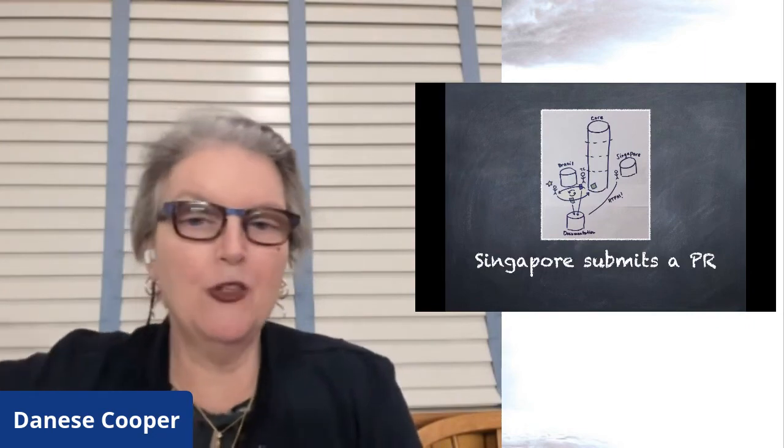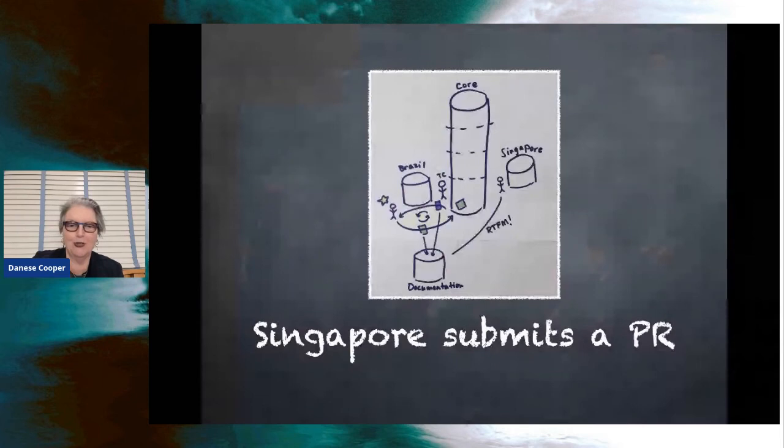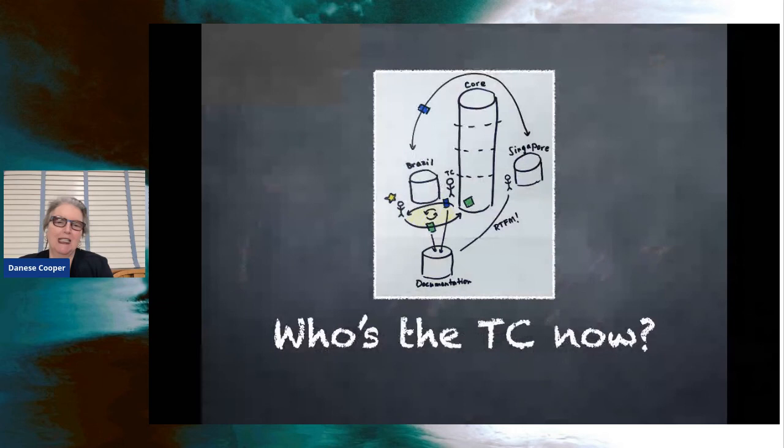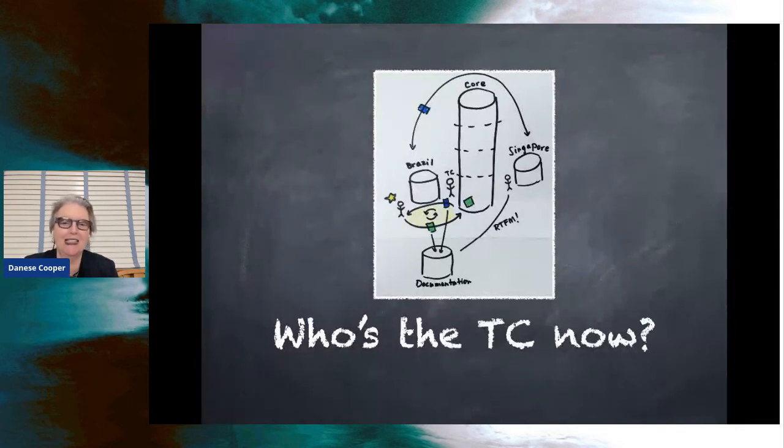So then when somebody from another part of the company like Singapore wants to submit that pull request, the trusted committer can say, go read the very fine manual that we created for you down in the documentation silo and then come back to me with a pull request. And then what happens if the guy from Brazil gets so good at writing code against this code base that they start sending the Singapore guy to him for instruction instead of sending him to the trusted committer? Does that mean that that Brazil guy is now a trusted committer on the project? Well, it probably does mean that.